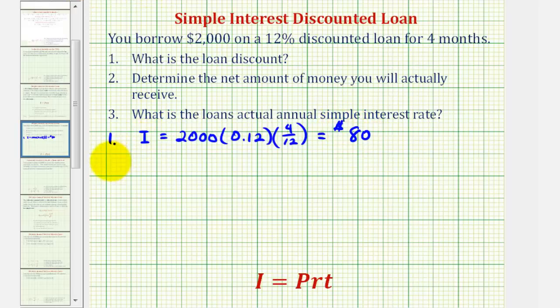So now for number two, to determine the net amount of money that you will actually receive, if there are no other fees, the net amount that you will receive would be the loan amount, $2,000.